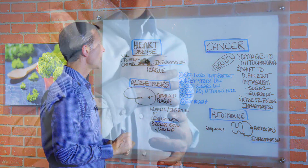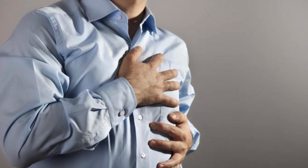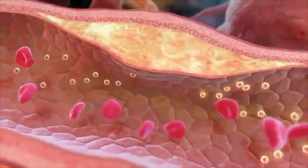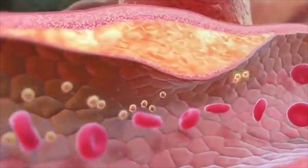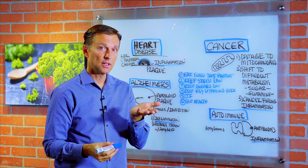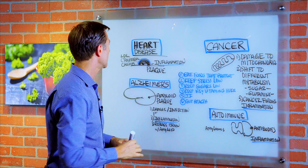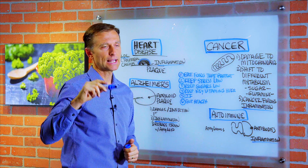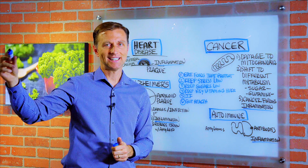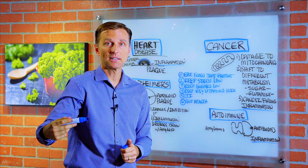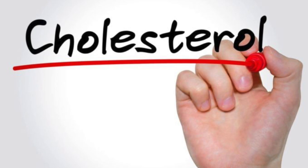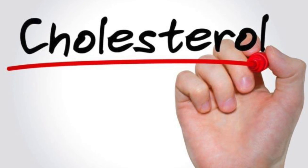Let's first talk about heart disease. What happens in the blood vessel of someone with heart disease is they start developing plaque, which is built up with cholesterol. The person usually has high LDL, called bad cholesterol — supposedly bad cholesterol. But in reality, LDL is low density lipoprotein. It has cholesterol in it, but it is a protein. There's a huge focus on cholesterol, but no attention given to the protein.